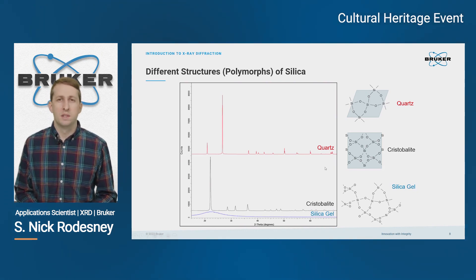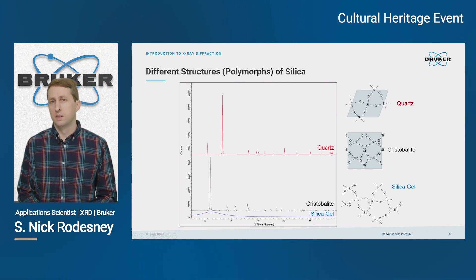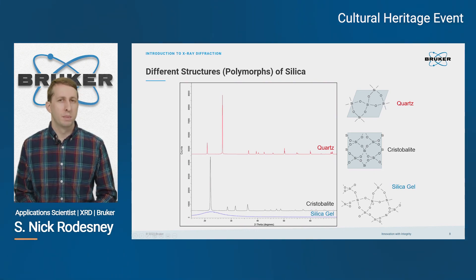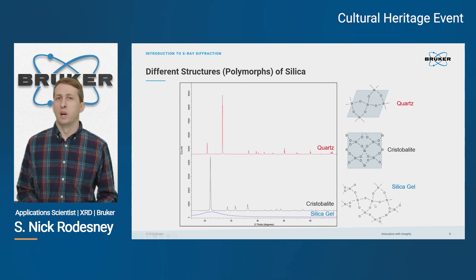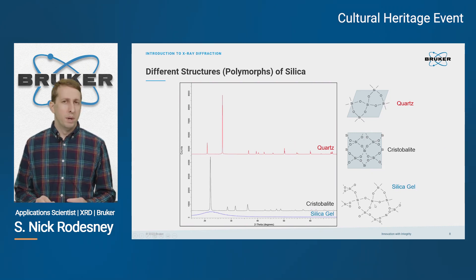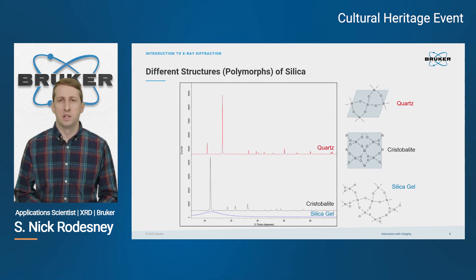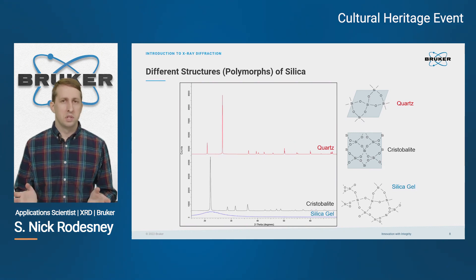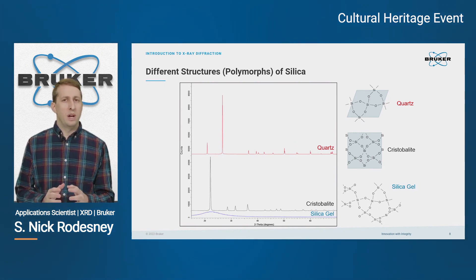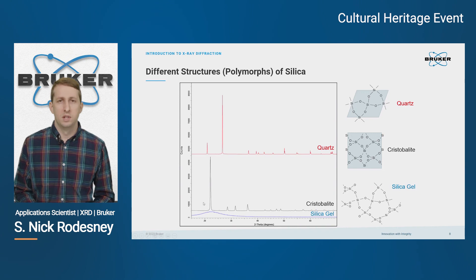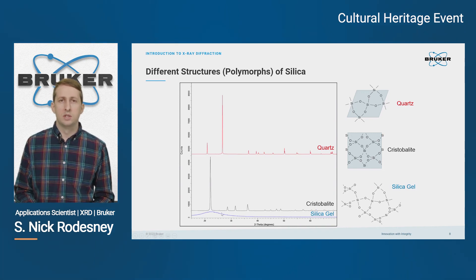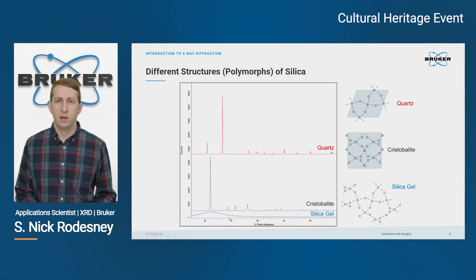If you look at this third example, the silica gel, you can see we have the same basic building blocks — silicon atoms surrounded by four oxygens — but there's really no rhyme or reason as to how those tetrahedra are connected to each other; it's all just random. So since we don't have any long-range order in silica gel, we see that in the diffraction pattern. We don't see any sharp peaks — instead, we just see a broad amorphous hump in our background.